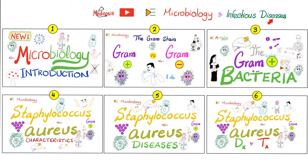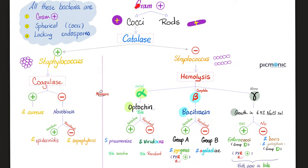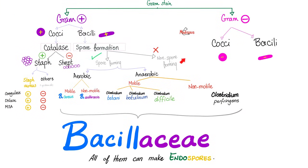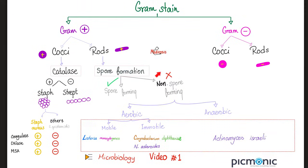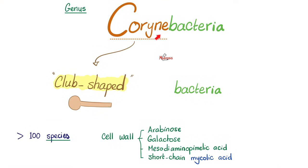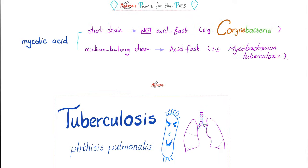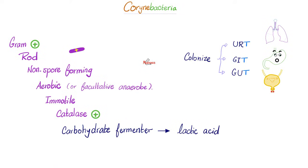Corynebacterium diphtheriae is a gram-positive rod, non-spore-forming, aerobic, and immotile. Corinium means club-shaped. Since it has short-chain mycolic acid, it is not acid-fast, unlike Mycobacterium tuberculosis. So Corynebacteria in general are gram-positive rods, non-spore-forming. They are aerobic yet immotile.